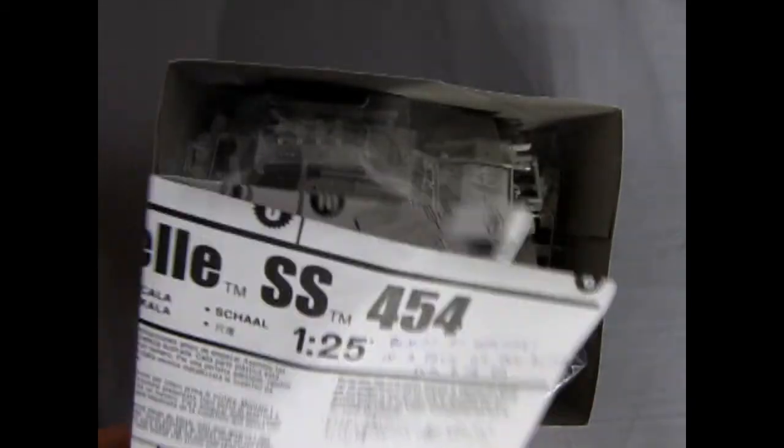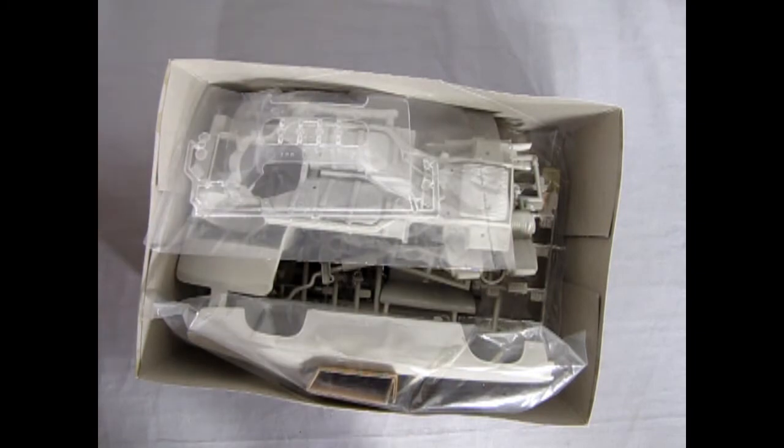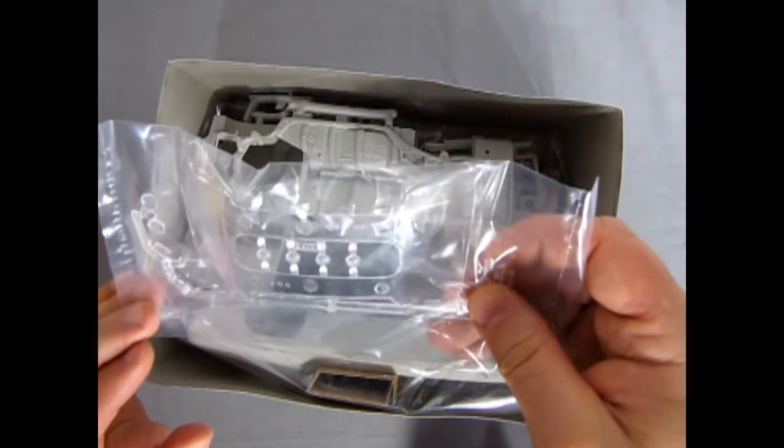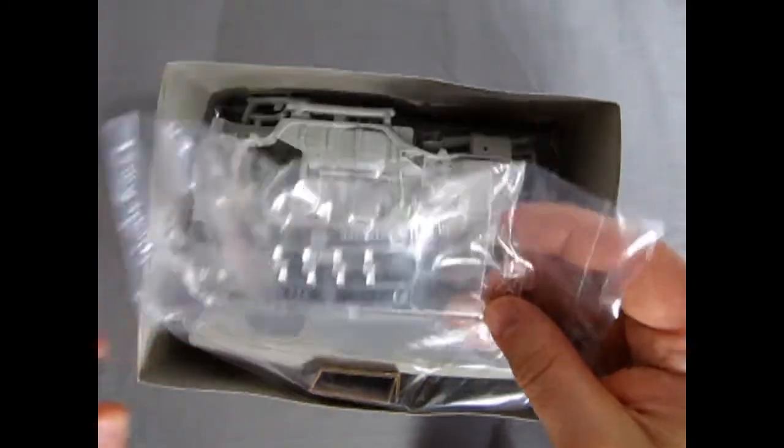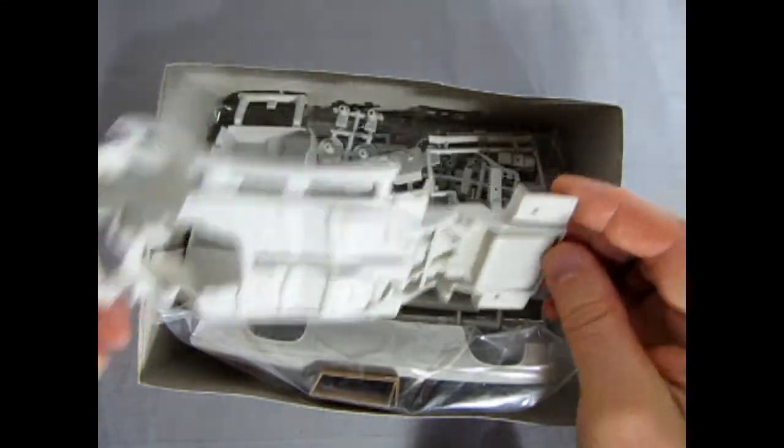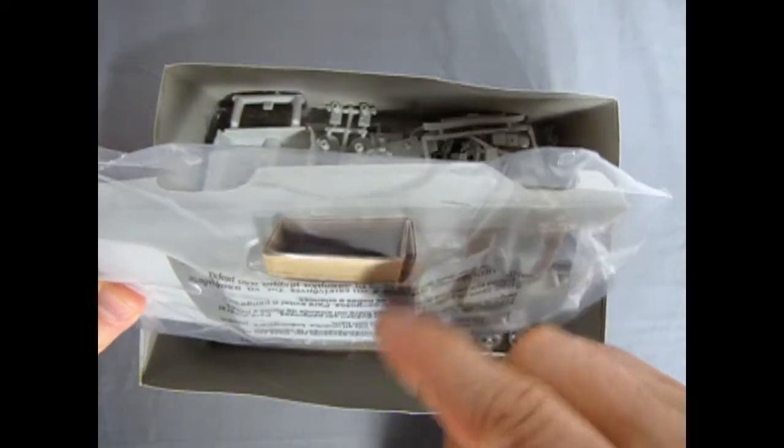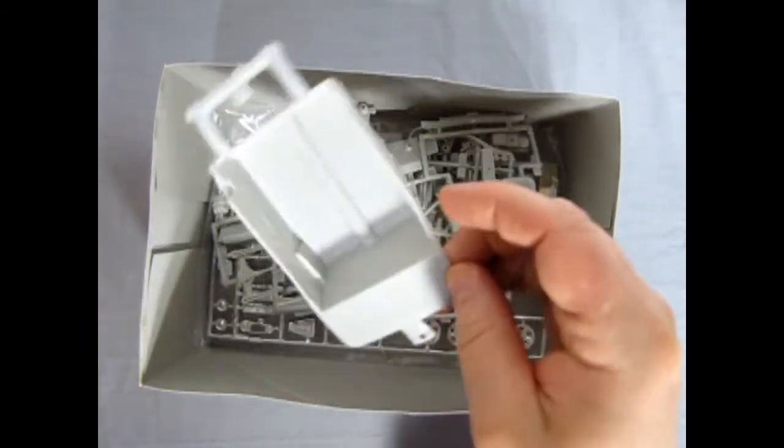So again we've got these 70s style instruction sheets for our 72 Chevy Chevelle SS 454. I always like how the instruction sheets say more than what's on the box top. There we've got our glass there. You know this is a 70s kit when you've got the runners going in on the windows. There's our undercarriage, our body with the nice little cardboard stuck in here so the roof doesn't get collapsed, which is a good thing that RC2 did.